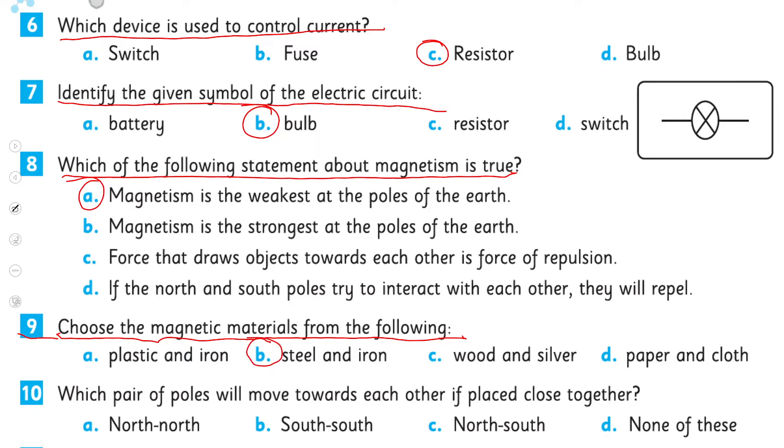Number nine: choose the magnetic materials from the following: plastic and iron, steel and iron, wood and silver, paper and cloth. So steel and iron are magnetic materials. Which pair of poles will move towards each other if placed close together? North and north, south and south, north south, none of these.